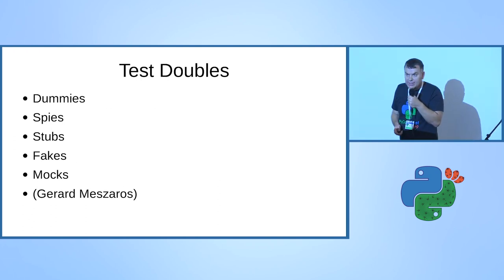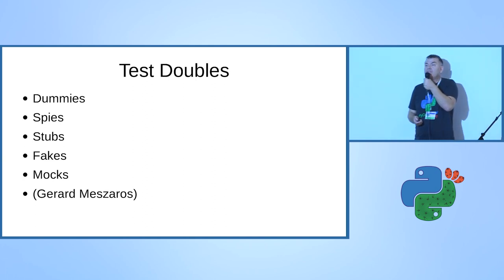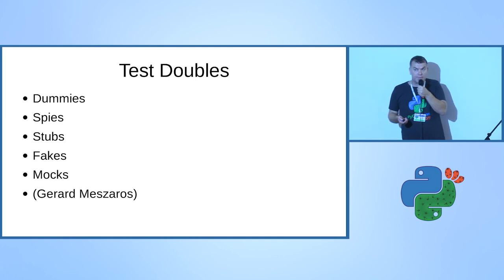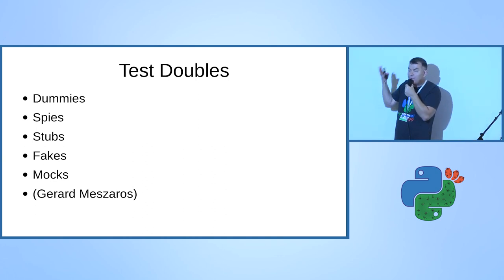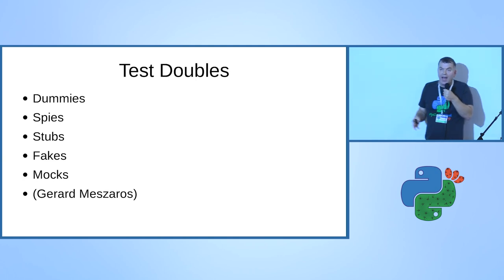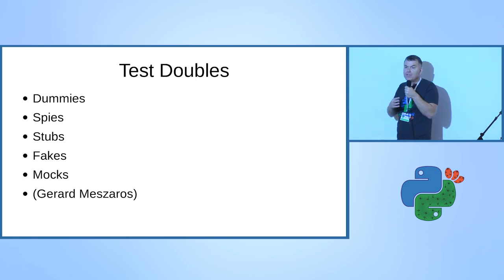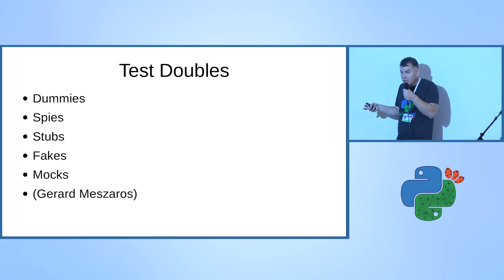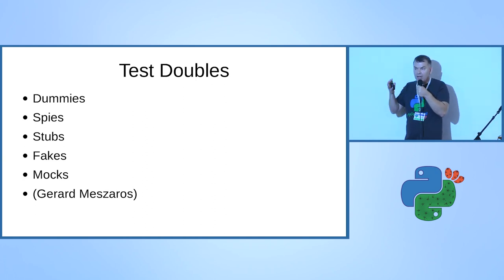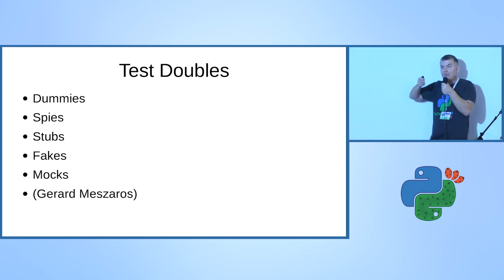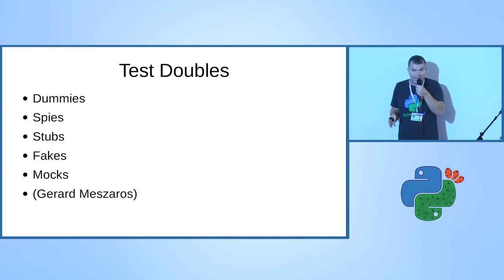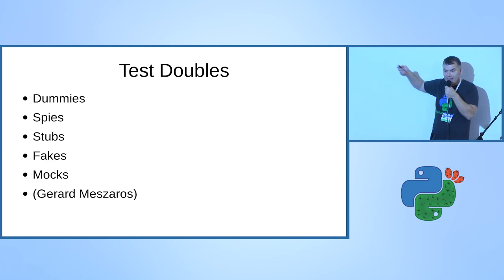Now a slightly separate subject of this talk: test doubles. Test doubles is a term created by Gerard Meszaros - a definition of five different things. Most of us use these words interchangeably. He created descriptions, and each one has a slightly different definition. If you want, you can read his book to understand the differences - dummies, spies, mocks, and so on.